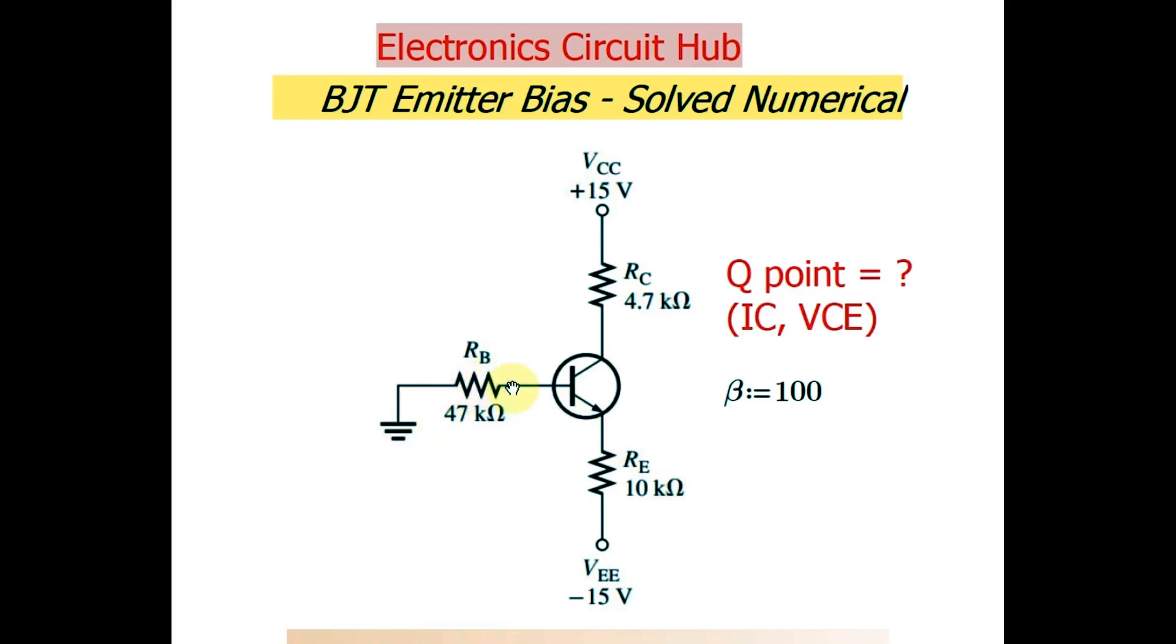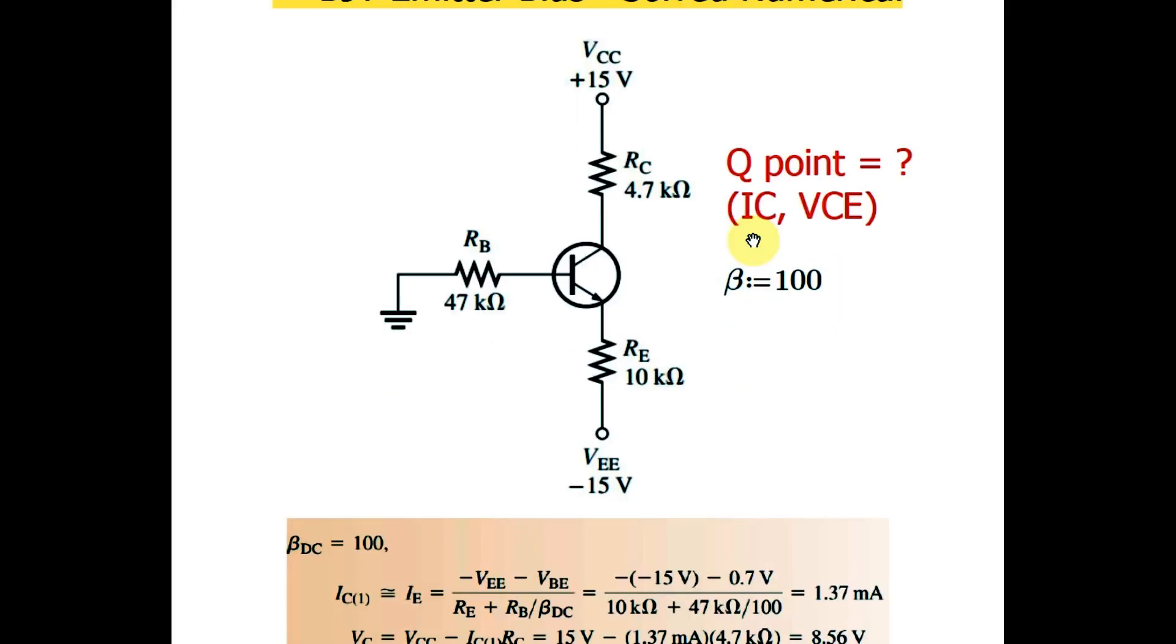If you want to find out the base to emitter voltage, VBE equals to 0 volt minus 1 volt, it remains minus 1 volt. That means your base is at higher potential than your emitter. So your transistor, this BJT, will start conducting and there is current flow from your collector to emitter. For this you have to find out the IC and VCE, and you have beta here that is 100.